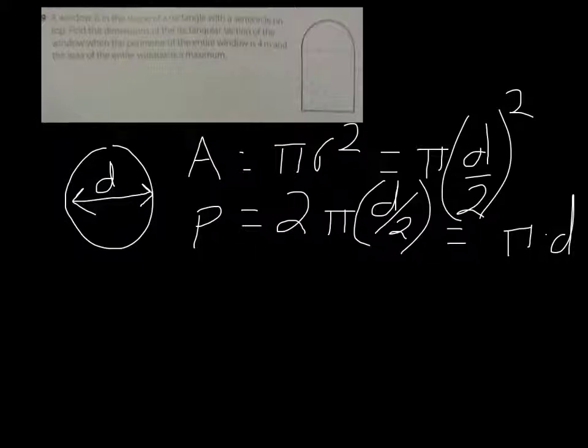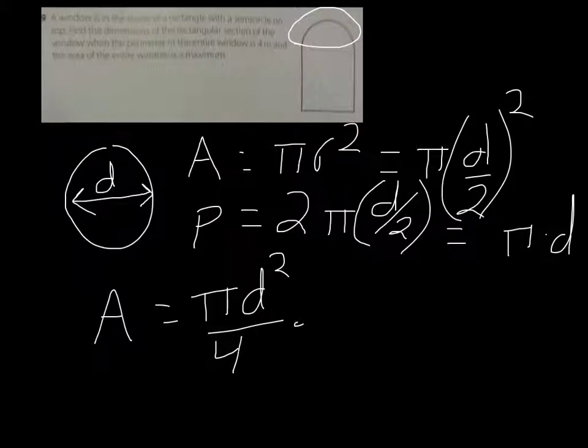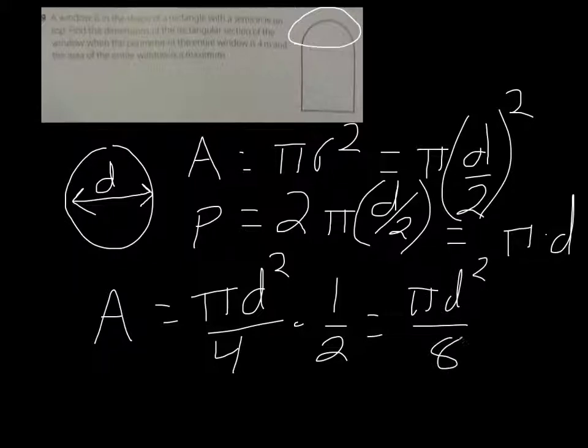But of course for ours we only have half the circle, so for this top portion of the shape that we have, our area is going to be equal to πd²/4 times 1/2, which is equal to πd²/8. So that is all this area in here.